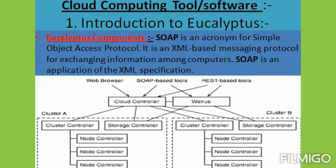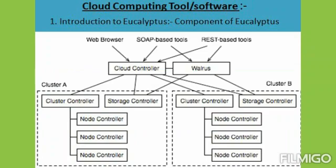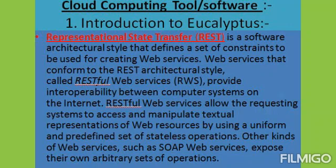There are five components in Eucalyptus software: first is cluster controller, second is cloud controller, third is node controller, fourth is storage controller, and fifth is walrus controller. The cluster controller manages one or more node controllers and is responsible for deploying and managing instances on them. It communicates with the node controller and cloud controller simultaneously and also manages networking for running instances under certain networking modes.